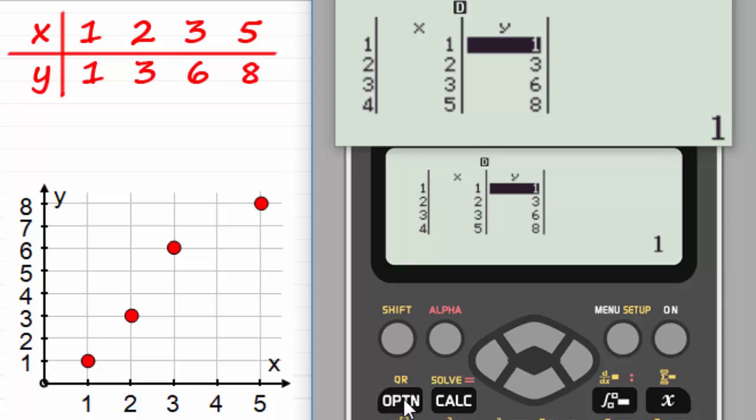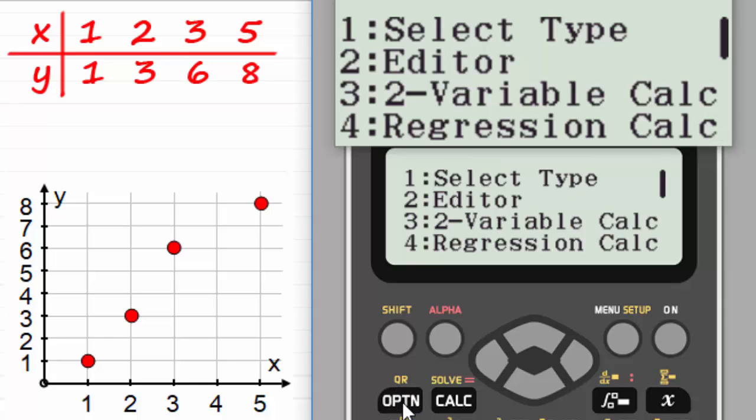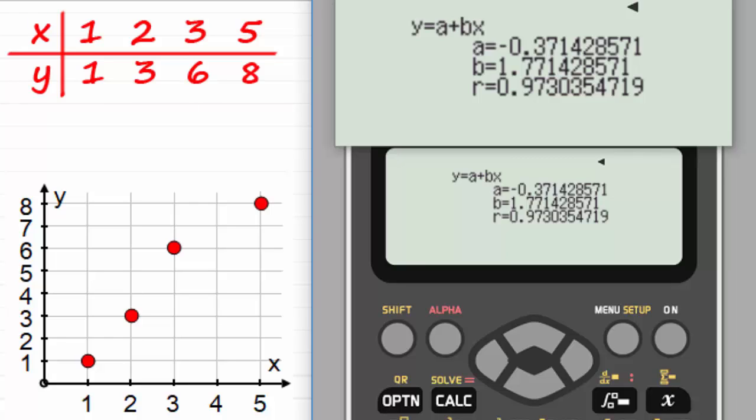To do that, we select the option key here. We're presented with this menu and we need to select option 4, regression calculations. You can see that what we're presented with now is a set of results. The correlation coefficient r turns out to be 0.973 and so on. I'm just going to put that in as 0.97 and so on. That's what we would expect. 0.97 is very close to 1, showing us that we have got the points closely lined up with a straight line, something like this.